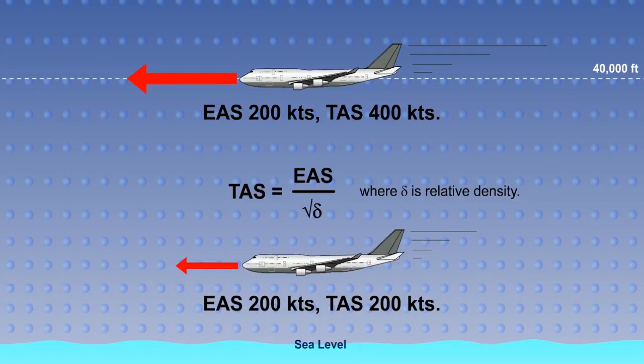Thus, at 40,000 feet, where the density is close to one quarter of the sea level value, the aircraft will be moving through the air twice as fast as at sea level to maintain the same EAS.